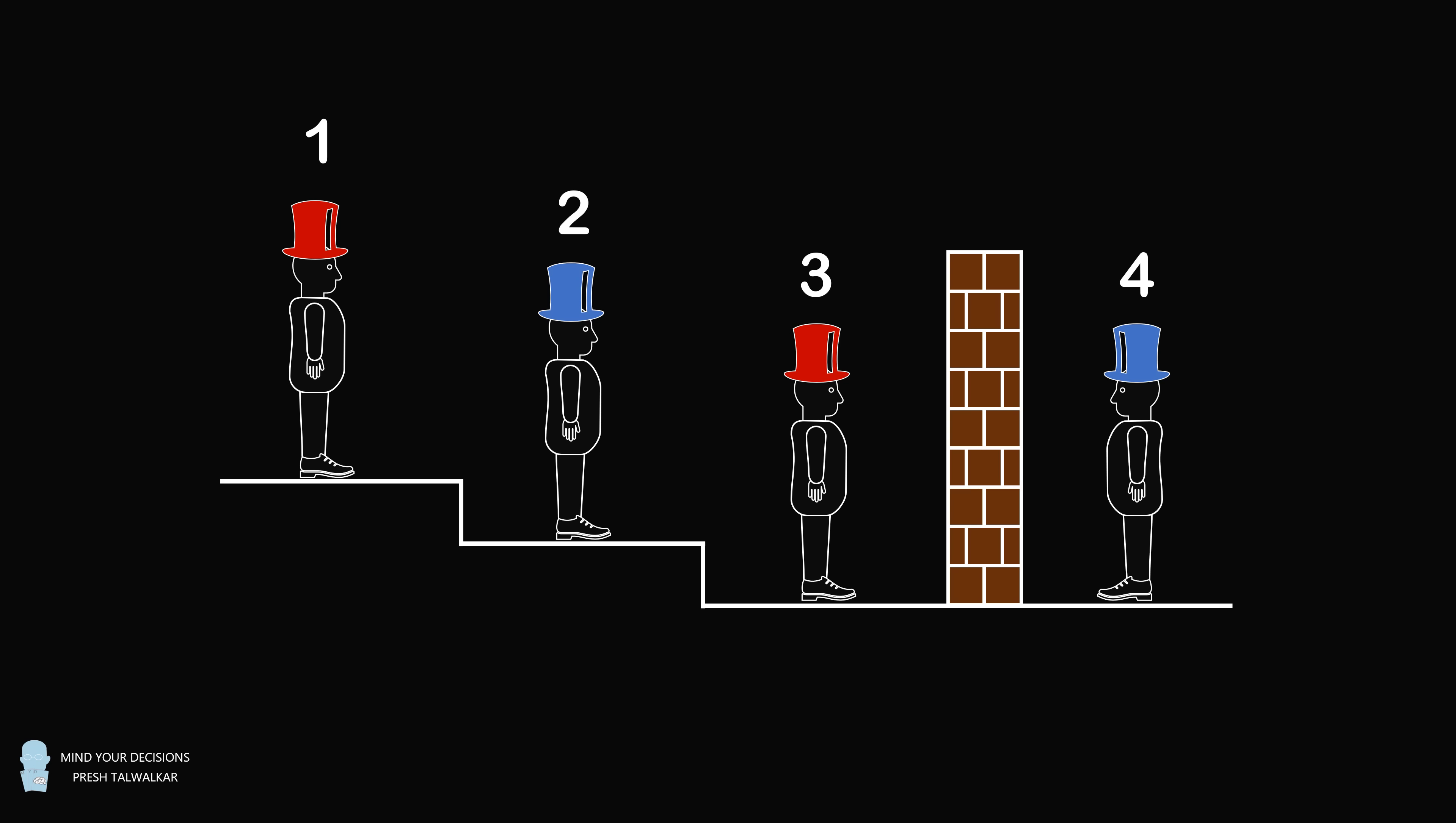So he lines up the four logicians as follows. We have one, two, three, all facing forward, then a brick wall, and then on the other side of the brick wall is logician four.